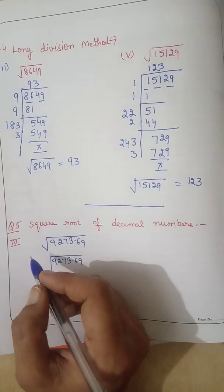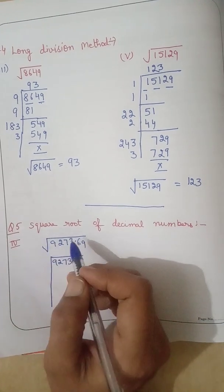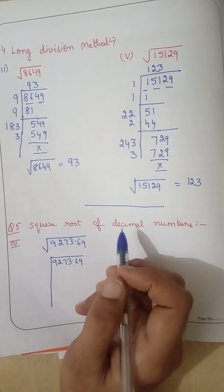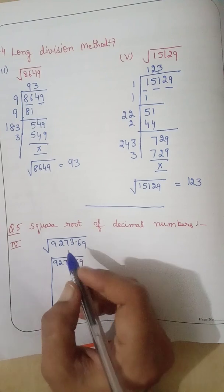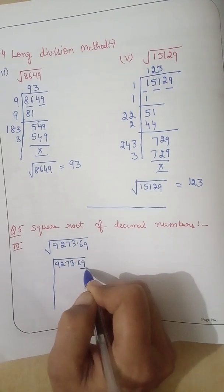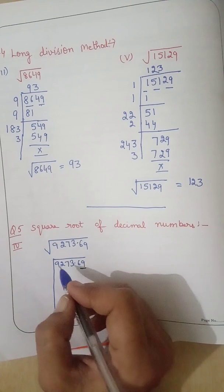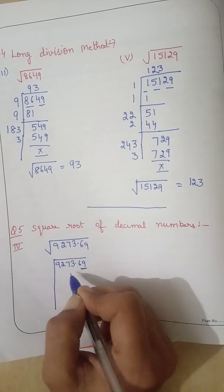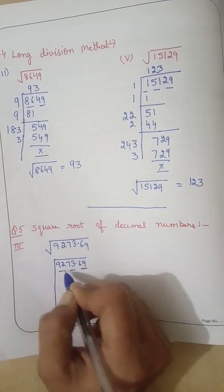Now question number 5, fourth part. Square root of decimal numbers. For decimal portion, we count from left to right. And for the integral part, we count from right to left.